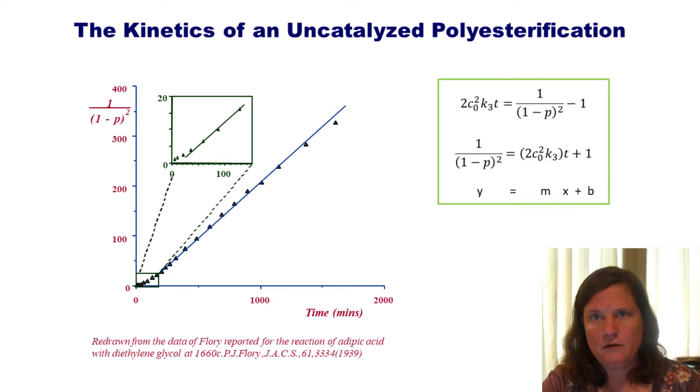It's very linear, except at really short times. Very linear. That means our assumptions are valid. Now, why is it not linear at very short times? Think about that. Hopefully you remembered that the reactivity, we have assumed that reactivity is independent of chain length, and it's a great assumption, except for monomers and dimers. They react a little bit faster. So that's why we see this deviation to a faster rate at very short times.